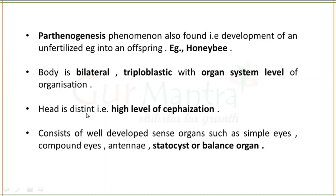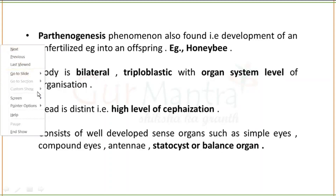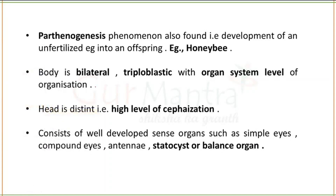Parthenogenesis is a form of reproduction in which an egg can develop into an embryo without being fertilized by a sperm — that is, without fertilization. Body organization: the organ system is present, symmetry is bilateral, and triploblastic nature is present. Cephalization is at a high level — the head is distinct.